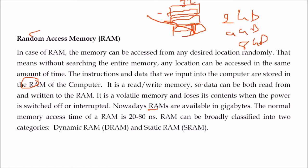The access time of RAM is also very good — 20 to 80 nanoseconds (nanoseconds = 10 to the power of -9 seconds), so RAM is very fast. RAM can be classified into two categories: dynamic RAM (DRAM) and static RAM (SRAM).